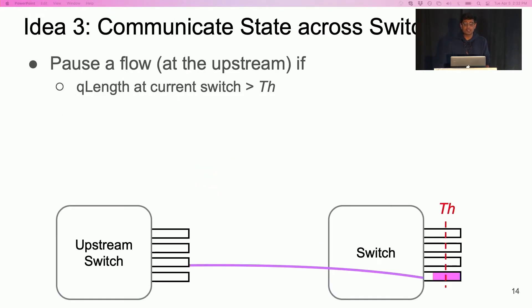Dynamic queue assignment poses another challenge for pausing and resuming flows. In BFC, a switch pauses a flow at the upstream if the length of the queue assigned to the flow exceeds a small threshold at the switch. With dynamic queue assignment, this flow could have been assigned any one of the physical queues at the upstream. So, how can we pause this flow?